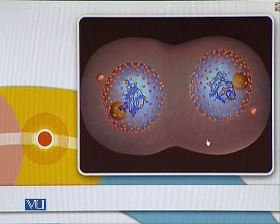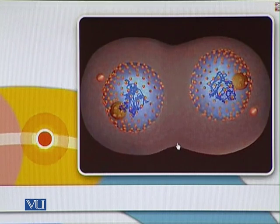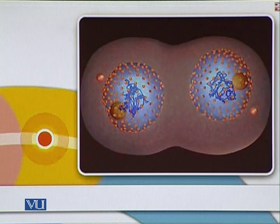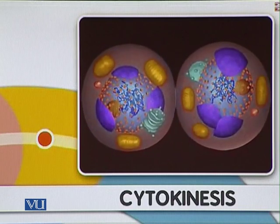The other organelles in the cell — the mitochondria, Golgi apparatus, and ER — are roughly equally divided between the two cells. A ring of actin filaments forms in the middle. These actin filaments contract using a motor protein, which splits the cell into two. The nucleus has already been split, and the actin filaments complete the division.